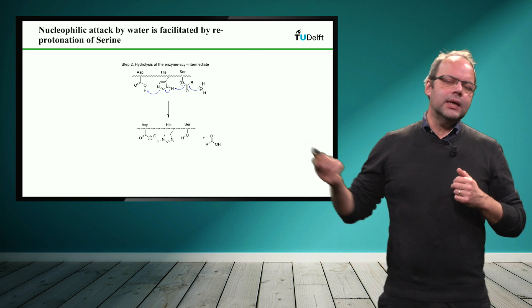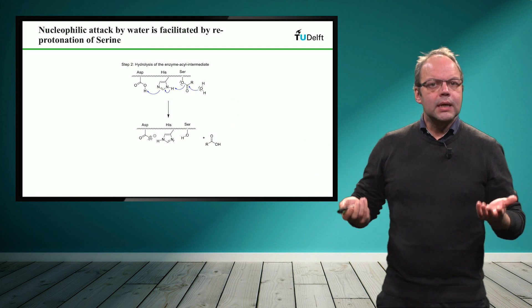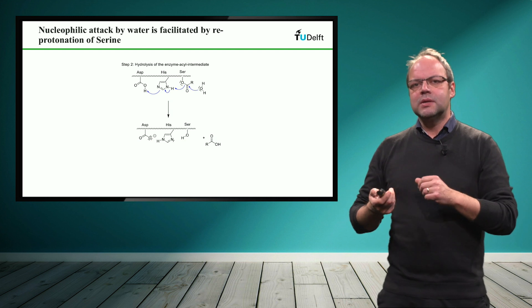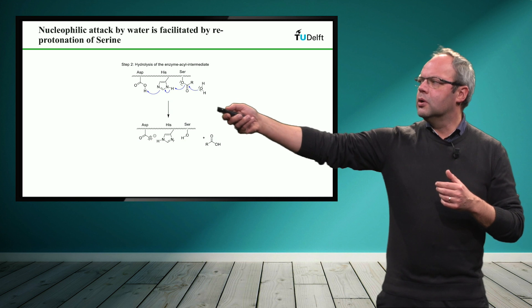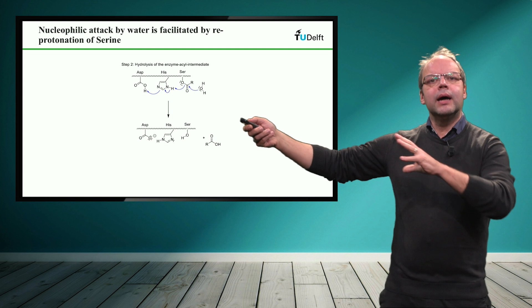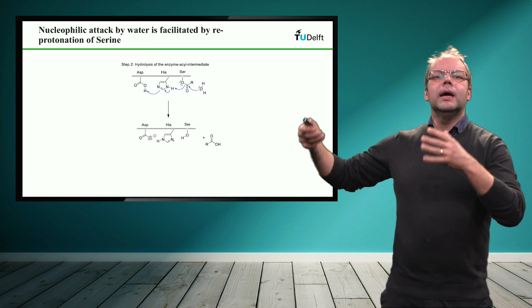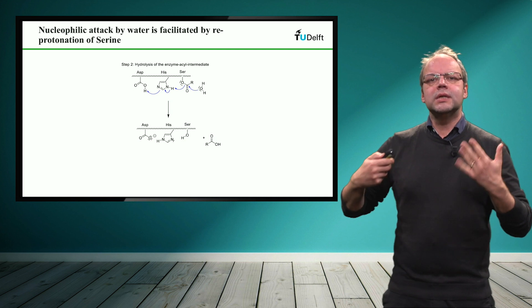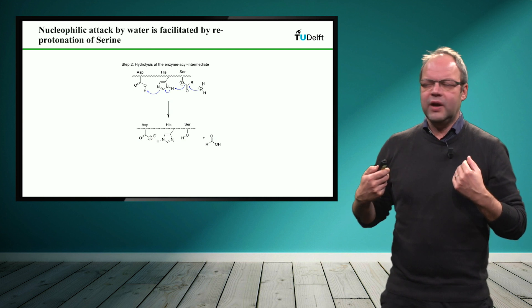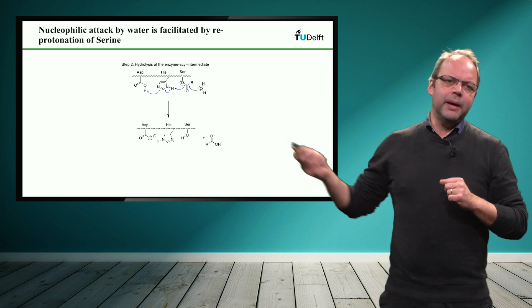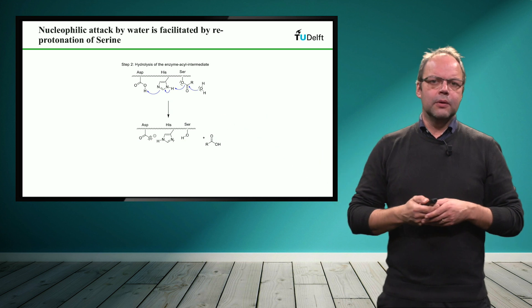We need to turn the serine into a good leaving group, which is not a good leaving group. But once we protonate it, it becomes a very good leaving group. And luckily we can get a proton from the histidine, which donates a proton to the serine, makes it a good leaving group. And in order to prevent the buildup of a negative charge at the histidine, which again would be energetically very unfavorable, we just take the proton from the aspartate and donate it back so we have completed the reaction.